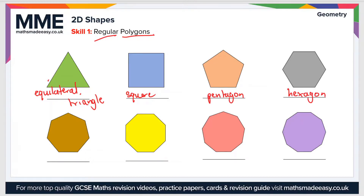A seven-sided shape is a heptagon — this is a regular heptagon. An eight-sided shape is an octagon, so that's a regular octagon. A nine-sided shape is a nonagon, so that's a regular nonagon. And finally, a ten-sided shape is a decagon, so this is a regular decagon.